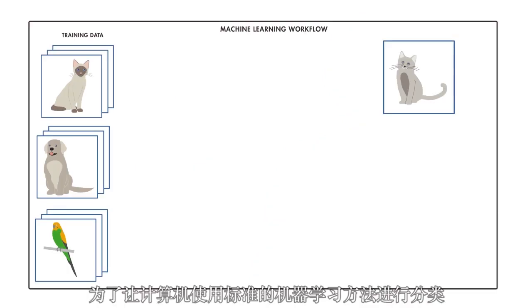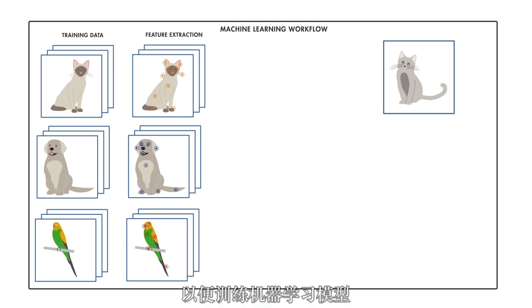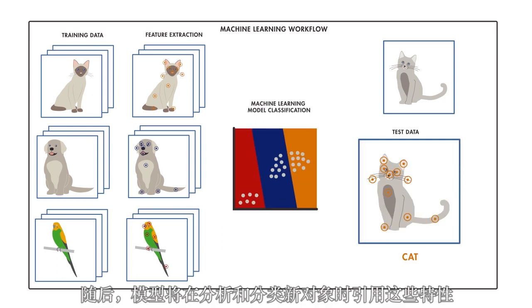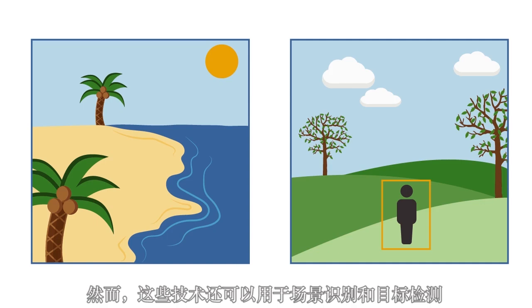To have a computer do classification using a standard machine learning approach, we'd manually select the relevant features of an image, such as edges or corners, in order to train the machine learning model. The model then references those features when analyzing and classifying new objects. This is an example of object recognition. However, these techniques can also be used for scene recognition and object detection.